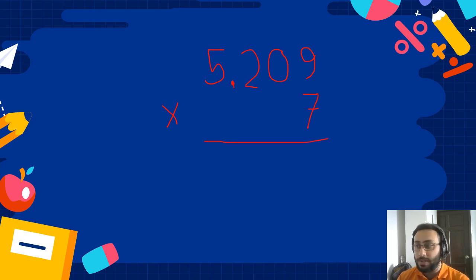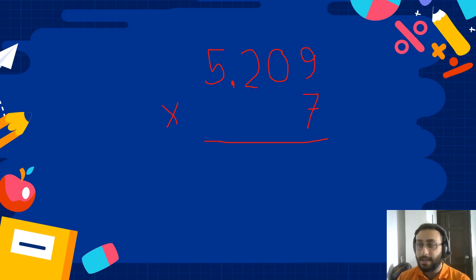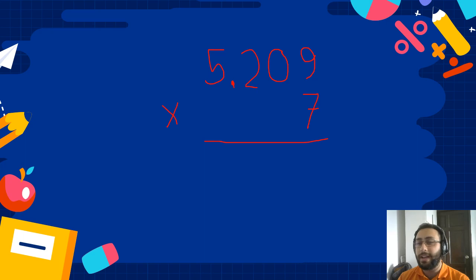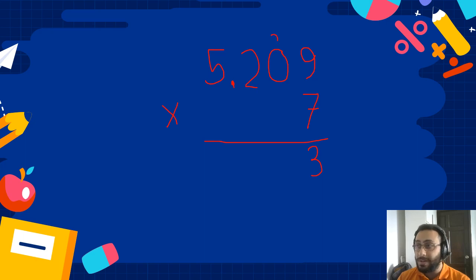What do we do first? We start from the ones. 7 times 9 — what is 7 times 9? It's 63. So we write 3 here. We carry the 6 to the next digit.